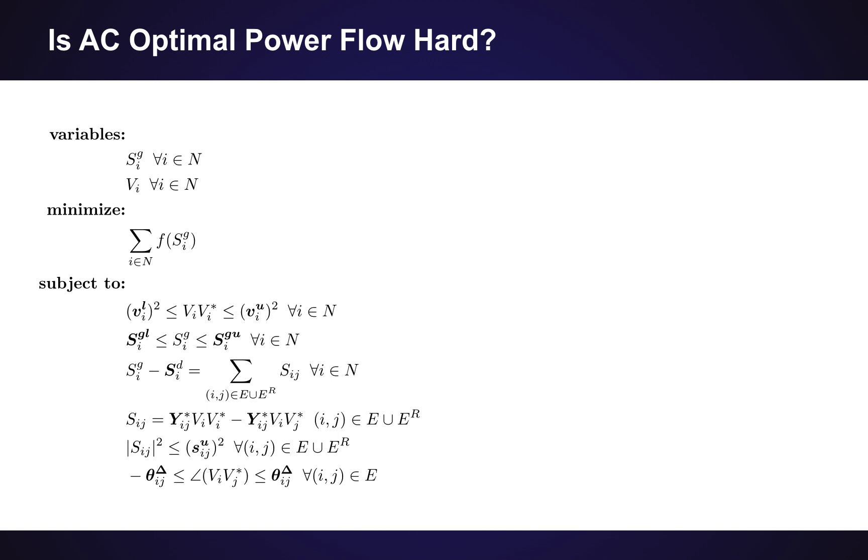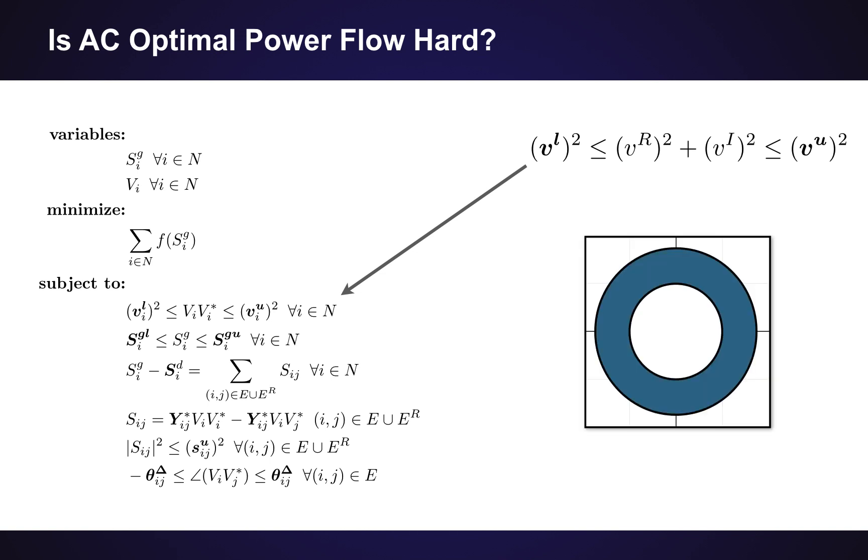So let's look at this AC optimal power flow problem and ask the question: is it a hard problem or is it an easy problem? Is it in this P class or is it in this NP class? To start to understand this, we can focus on this particular constraint which captures the engineering requirement of having the voltage magnitudes within some bounds. What I'm showing you here is taking that voltage magnitude constraint and expanding it out into real numbers. We have the real component of the voltage i, the imaginary component of the voltage i, and we're squaring both of them because we're taking the absolute square of that complex number. Then we have the lower bound and upper bound data that comes from the problem specification.